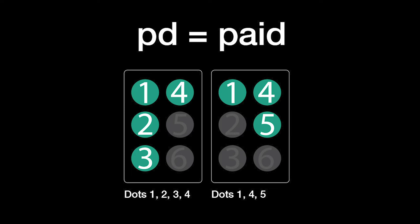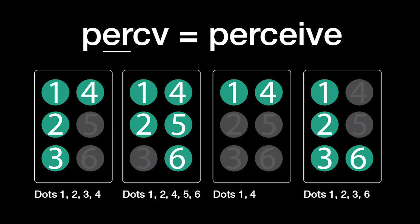Paid is P-D: dots 1, 2, and 4, plus dots 1, 4, and 5.